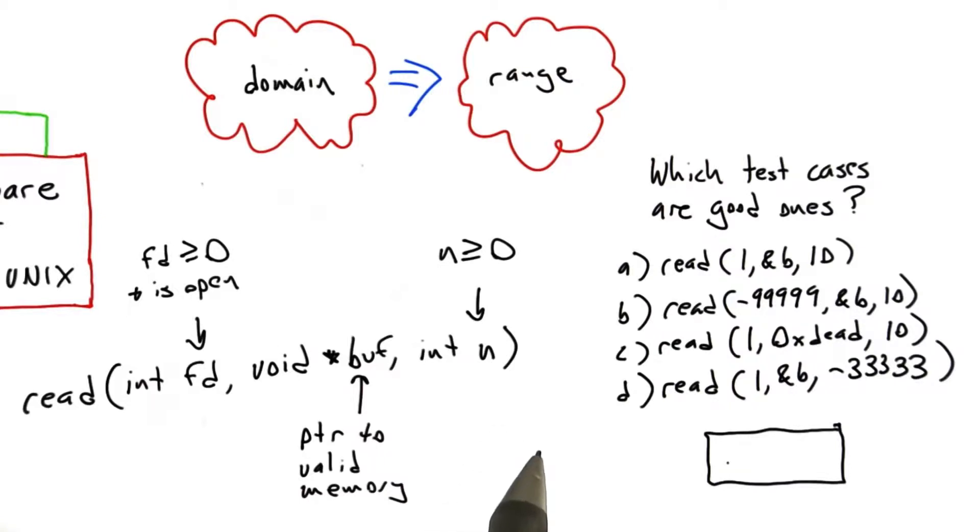So the answer is all of the above. And the reason is, when we're testing something like an operating system kernel, we want to test it basically with all possible values of the parameters for the calls that it supports.